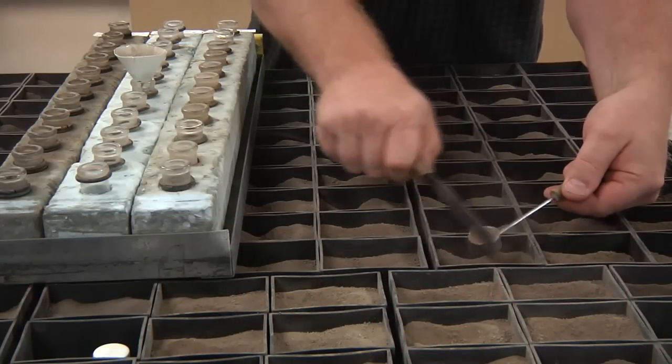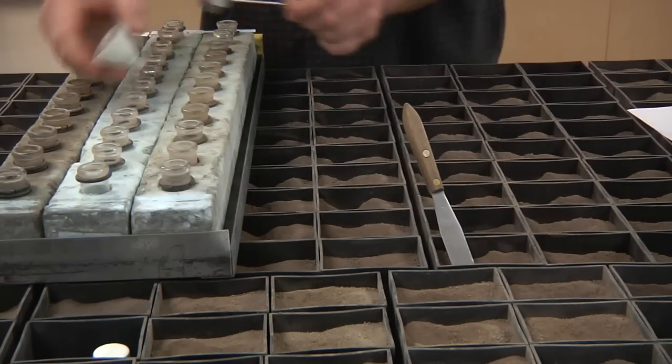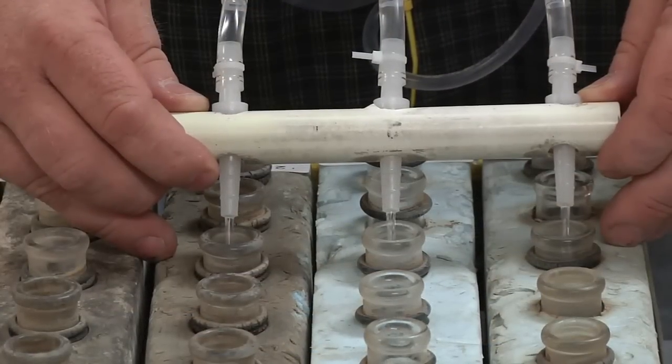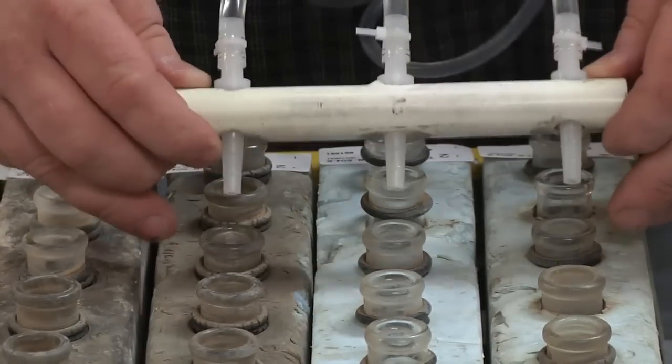When we do soil testing in the lab, the first thing we do is measure an accurate amount of soil and put it into a flask. Then we add extracting solution.